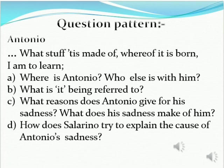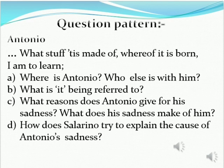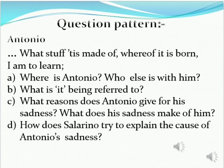I have given questions such as: where is Antonio, who else is with him, what is "it" being referred to — it refers to the sorrow of Antonio — the reasons which Antonio gives for his sadness, what his sadness is making out of him — just a dull fellow — and how does Salerino try to explain the cause of Antonio's sadness. What you will do, children: you will make a small single-ruled copy and in that you will write Act 1, Scene 1, and try to answer these questions. Don't worry, don't panic — whatever you know, write. And when the school reopens, we will discuss these answers.